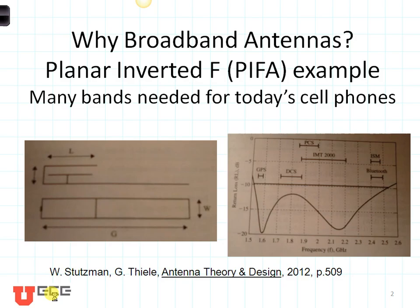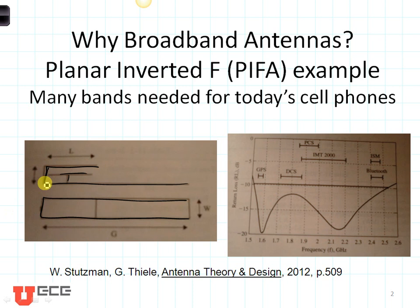Broadband antennas are particularly interesting because we have many applications today where multiple bands are needed. The example we'll be talking about for the next few minutes is this planar inverted F antenna. The PIFA is made from a piece of copper — hence planar — and it's bent like this and fed with this simple feed system. If you look closely, here's the F part of the planar inverted F.